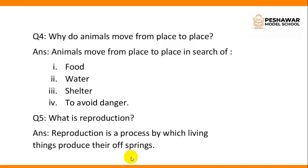Question number 5: What is reproduction? Answer: Reproduction is a process by which living things produce their offspring.